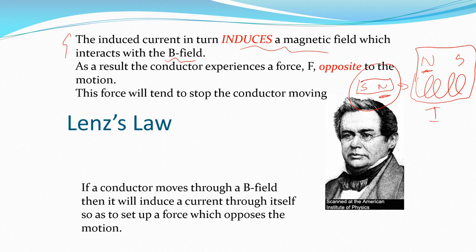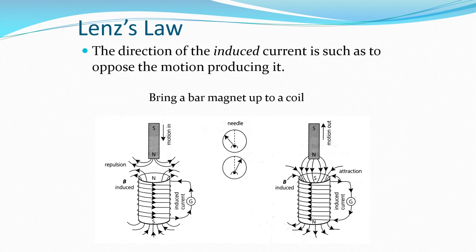The force will tend to stop the conductor moving. If a conductor moves through a magnetic field, it will induce a current through itself so as to set up a force which opposes the motion. The direction of the induced current is such as to oppose the motion producing it.